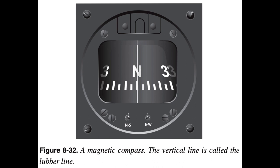A graduated scale called a card is wrapped around the float and viewed through a glass window with a lubber line across it. The card is marked with letters representing the cardinal directions — north, east, south, and west — and a number for each 30 degrees between these letters. The final zero is omitted; for example, 3 equals 30 degrees, 6 equals 60 degrees, and 33 equals 330 degrees. There are long and short graduation marks between the letters and numbers, each long mark representing 10 degrees and each short mark representing 5 degrees. The float and card assembly has a hardened steel pivot in its center that rides inside a special spring-loaded hard glass jewel cup. The buoyancy of the float takes most of the weight off the pivot, and the fluid damps the oscillation of the float and card. This jewel and pivot-type mounting allows the float freedom to rotate and tilt up to approximately 18 degrees angle of bank. At steeper bank angles, the compass indications are erratic and unpredictable.